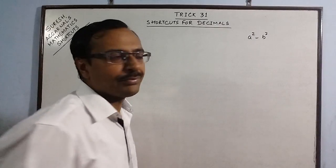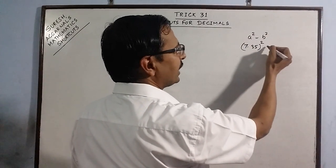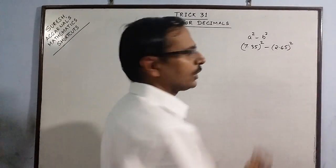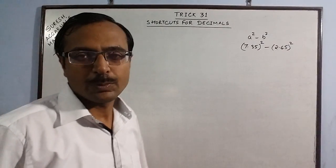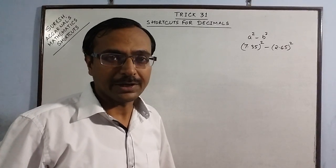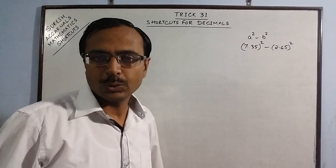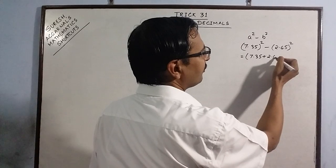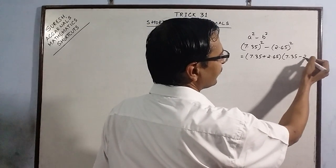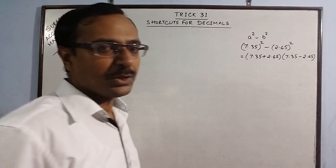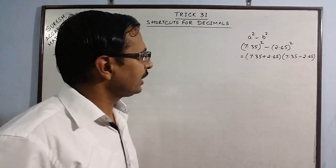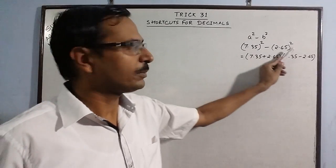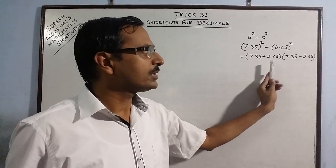Suppose I take an example: 7.35 squared minus 2.65 squared. If you start calculating the squares here, you will consume a lot of time and your answer is not guaranteed to be correct. You should know the basic identity of a squared minus b squared — that is, add once and subtract once. Whenever the squares of two numbers are subtracted, you add the two numbers and then subtract the two numbers.